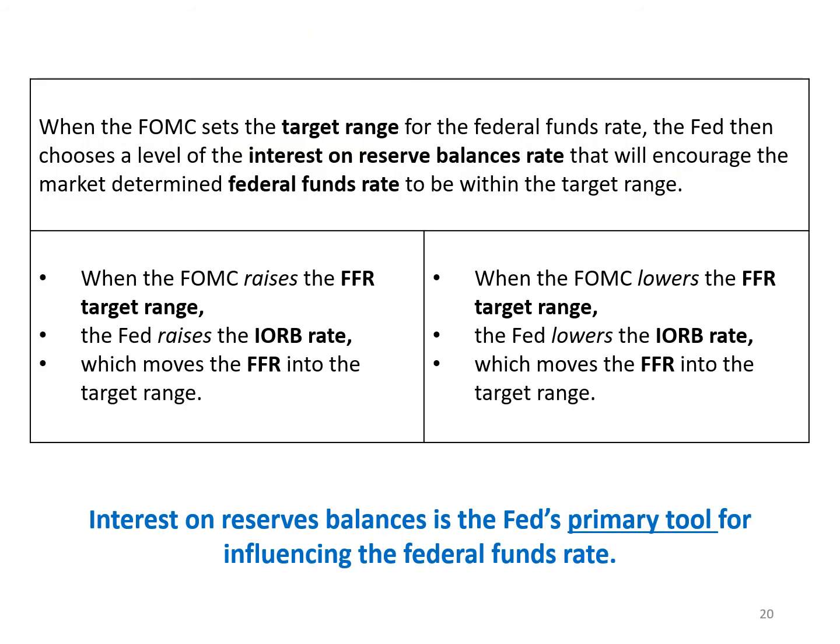This slide summarizes why interest on reserve balances is the Fed's primary tool for influencing the federal funds rate. The FOMC conducts monetary policy by setting the target range for the federal funds rate. The Fed implements monetary policy by setting the interest on reserve balances rate to adjust the federal funds rate within that target range. When the FOMC raises the target range, the Fed raises the interest on reserve balances rate, steering the federal funds rate up. When the FOMC lowers the target range, the Fed lowers the interest on reserve balances rate, steering the federal funds rate down.